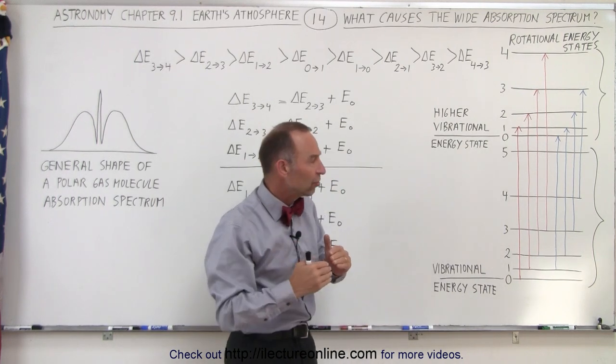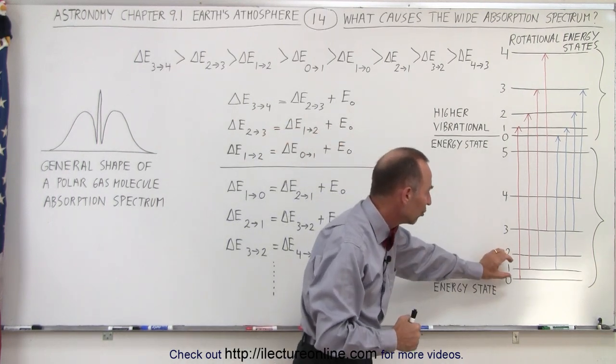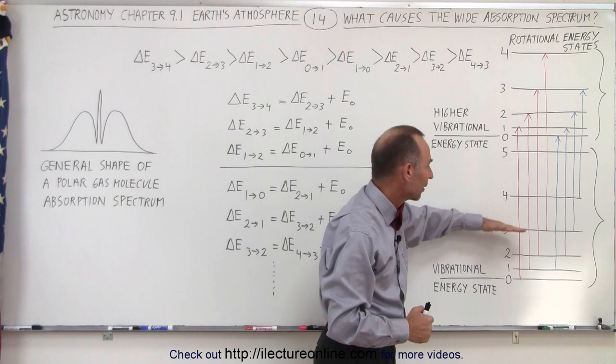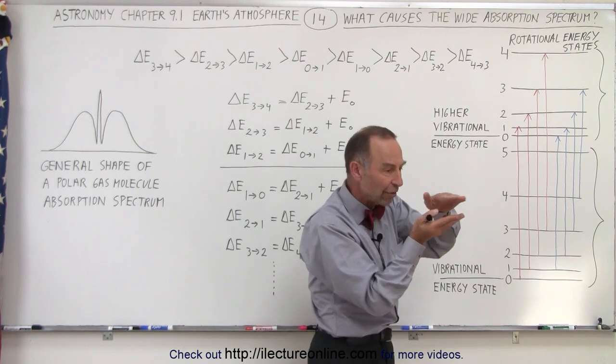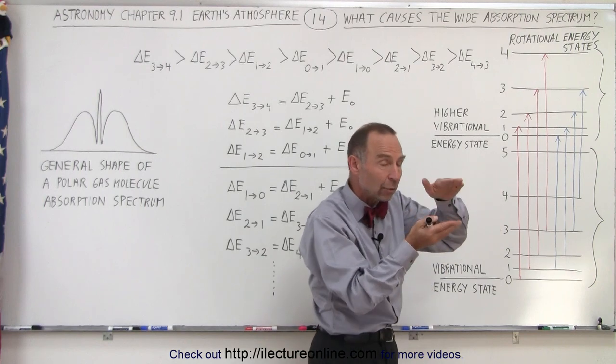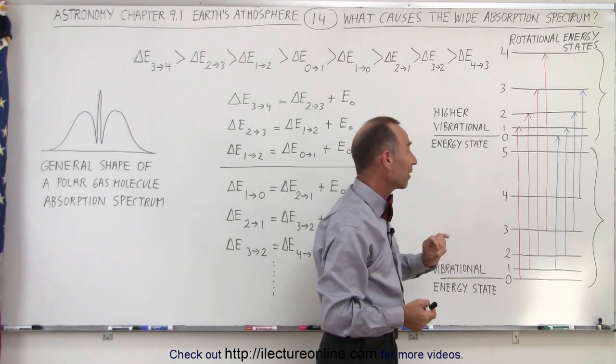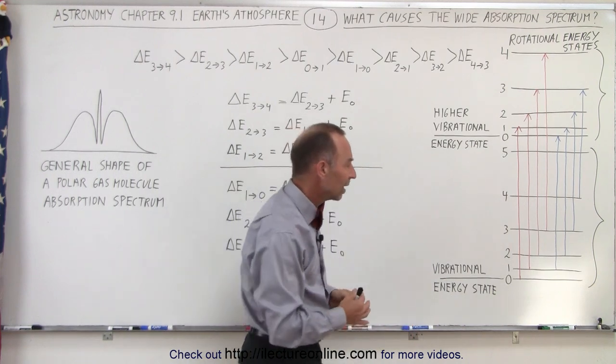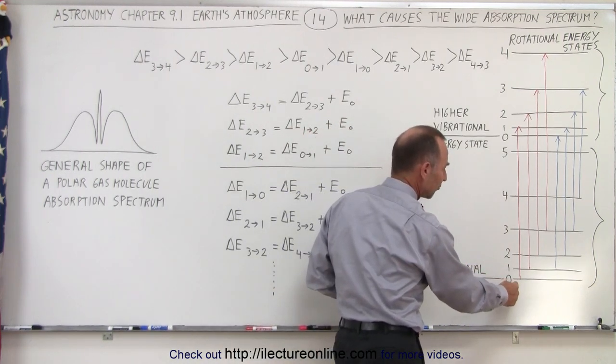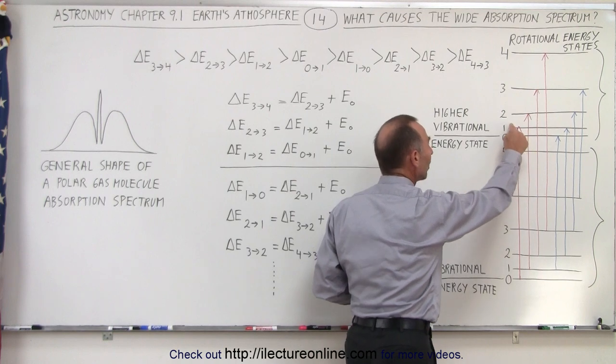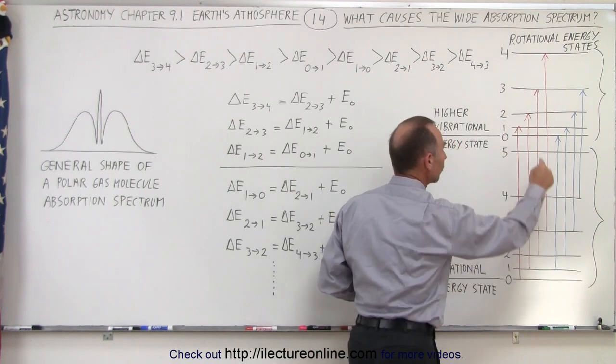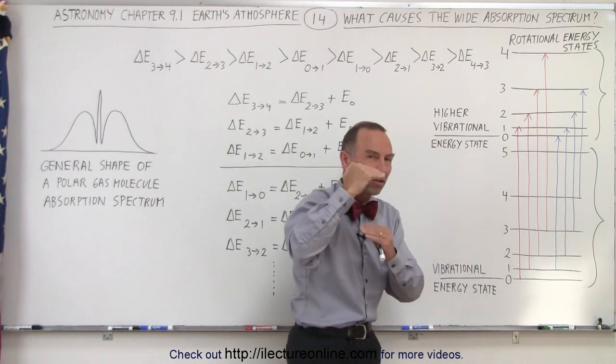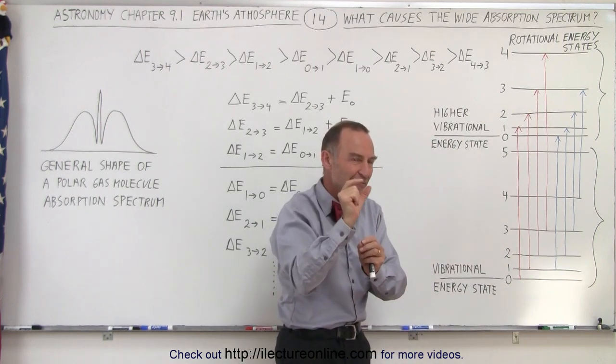In the rotational energy states, the energy difference of every consecutive state keeps increasing by a fixed amount for each next energy state. If we have a change from the zero state to the one state versus the one state to the two state versus the two state to the three state, the amount of energy difference keeps increasing by a fixed amount.